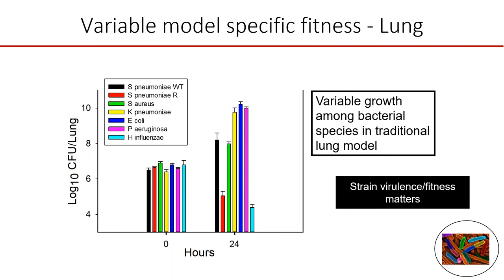Some organisms are very difficult to get to grow well in the lung model, such as Haemophilus and some Streptococci. However, typical gram-negative pathogens such as Klebsiella, E. coli, and Pseudomonas grow quite well in the lung model — often achieving 2 to 3 or more log growth over 24 hours.